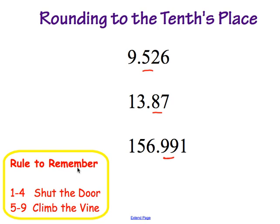The rules are: 1 through 4, shut the door, and 5 through 9, climb the vine. So that number after the underlined number — we are looking to see if it is 1 through 4. If it is, we are going to keep that underlined number the same. If it is 5 through 9, then we are going to increase the underlined number by 1. Another thing to remember is that after you have changed or kept that underlined number the same, all the numbers after it will turn to zeros.